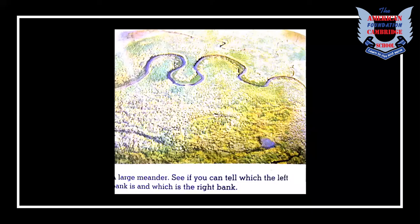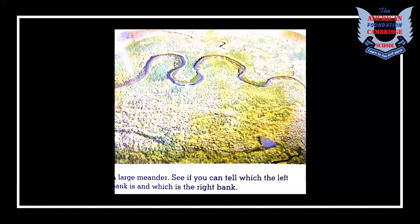By the time the middle course of the river enters the lower course, it has collected a massive volume of water. This is a satellite picture of the River Indus taken in 1992, where a channel of the river has cut across a meander, as you can see.